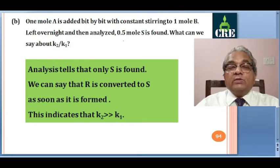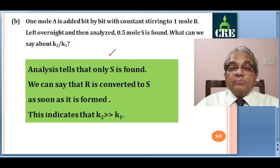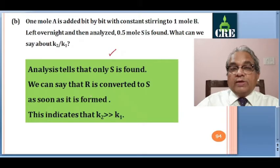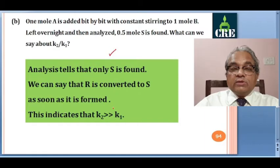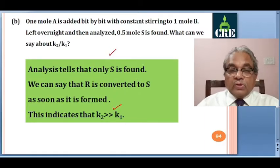Recalling the first plot where only S is formed until complete B is consumed, R is converted to S as soon as it is formed. So no R is detected as long as B is present. This indicates that K2 must be much, much greater than K1.